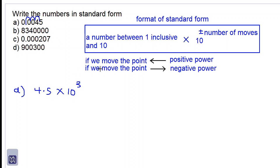So we write 3 here. Let's see what direction we went in. We went this way. We move the point forward like this, and so the power has to be negative. So our answer is 4.5 × 10^-3.